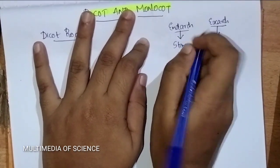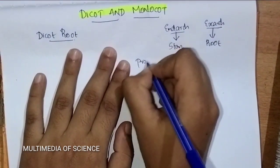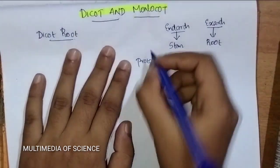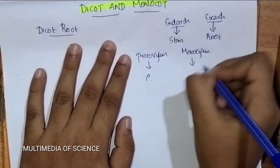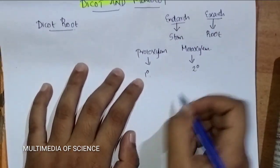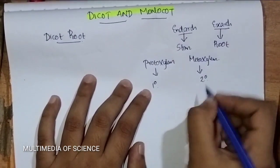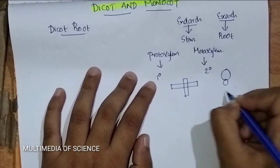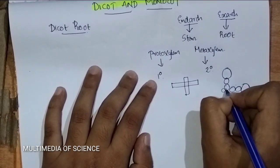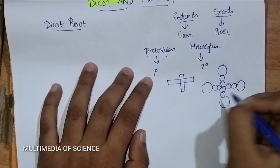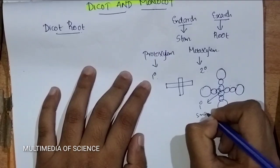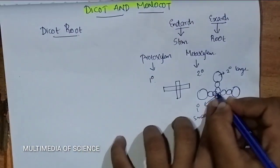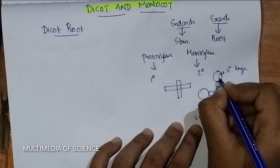Now it is about Protoxylem and Metaxylem. You want to know what is meant by Protoxylem and Metaxylem. Protoxylem is primary in origin and Metaxylem is secondary in origin. A trick is used: the primary one is very small — that is Protoxylem. The secondary one is large — that is Metaxylem. So the smallest one is called Protoxylem and the largest one is called Metaxylem.